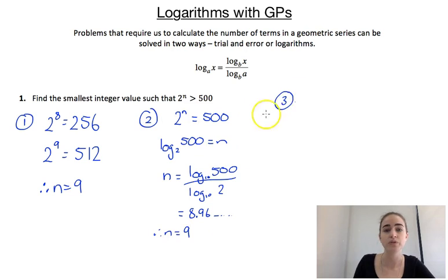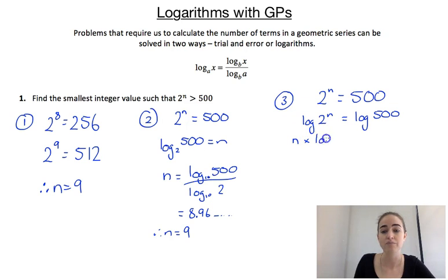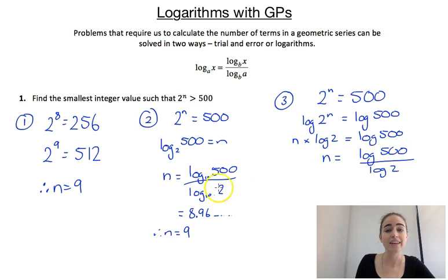The third way we can use it also uses logs, but in a slightly different way. So we'll start off again with 2^n equals 500, and this time, instead of rewriting it, we're actually just going to take the log of both sides. So if we do log of 2^n equals log of 500. Now, using our log laws, that n, that power, can be brought down the front, so we've got n times log 2 equals log 500. And remember, when we're writing log, we do just mean log base 10. And then to get the n on its own, we can write log 500 over log 2. And this now is exactly what we had over here. So that's going to give us our 8.96 and so on to give us therefore n equals 9 for our answer. So all of these are perfectly valid ways of answering this question, so you can use whichever way makes most sense to you.